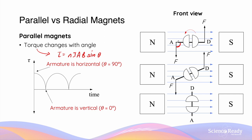Initially, when the plane of the armature is horizontal, this angle is 90 degrees. And as the armature starts to rotate, this angle quickly changes and increases from 90 degrees. So as this angle theta changes, the torque also changes.